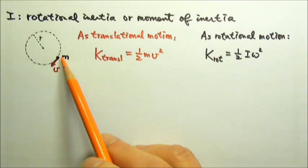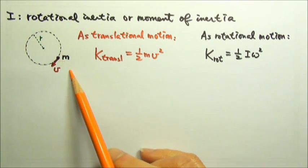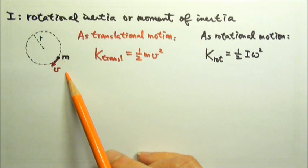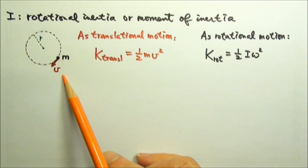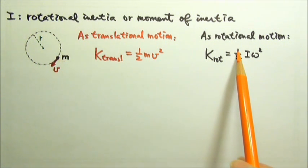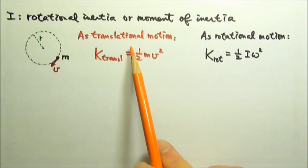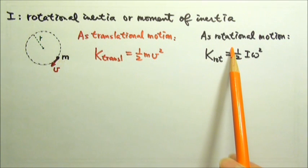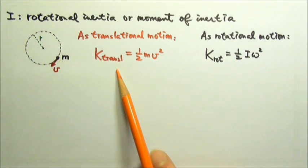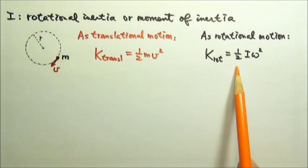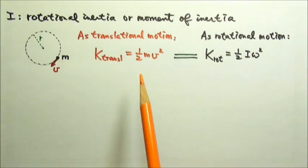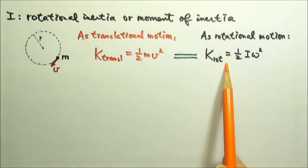Of course, this particle has a certain amount of kinetic energy. Energy is energy, the amount of kinetic energy this point mass has should be the same no matter how we treat the motion, whether we treat it as translational motion or rotational motion. The amount of kinetic energy it has should be the same. So these two should equal to each other.